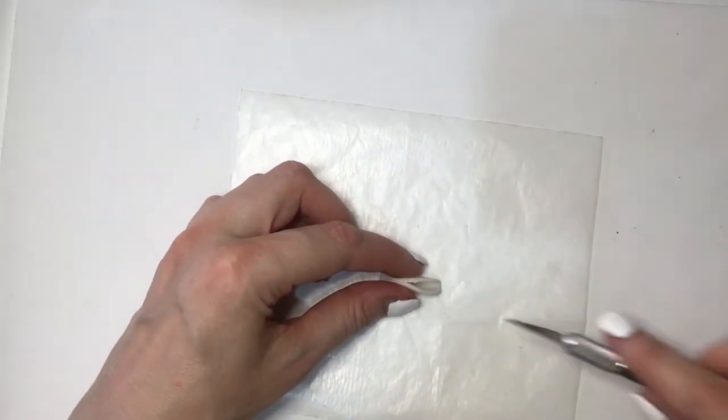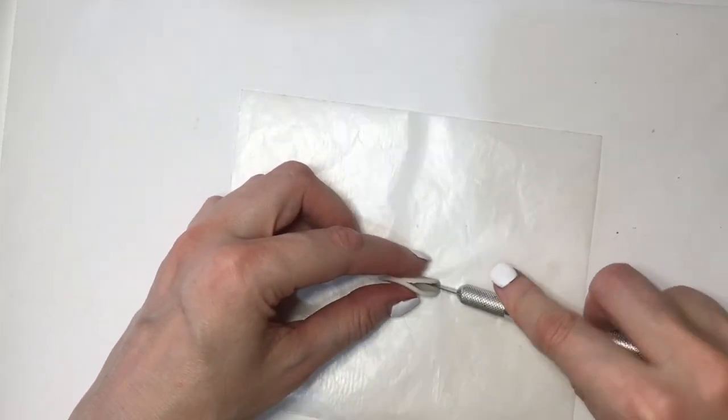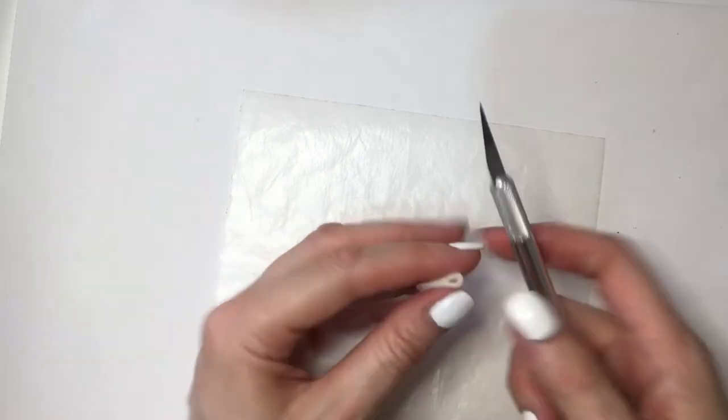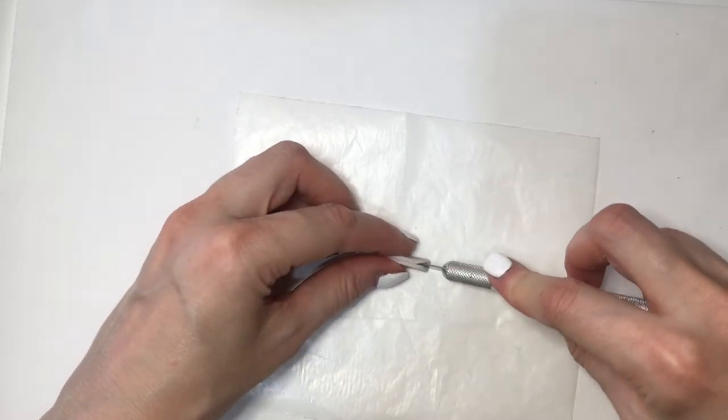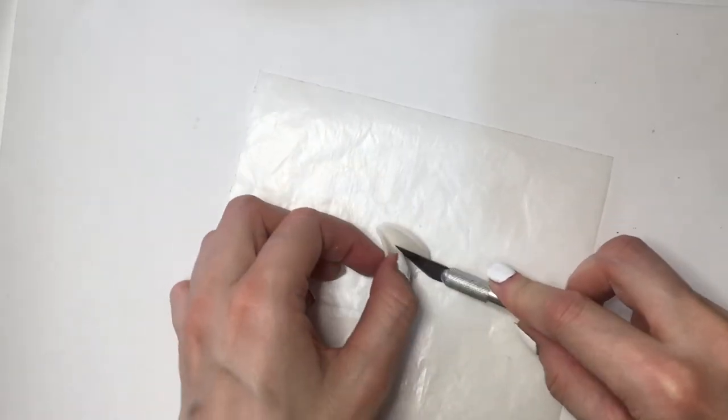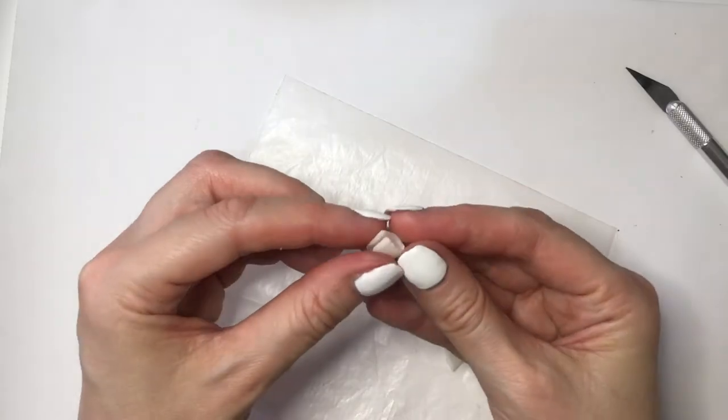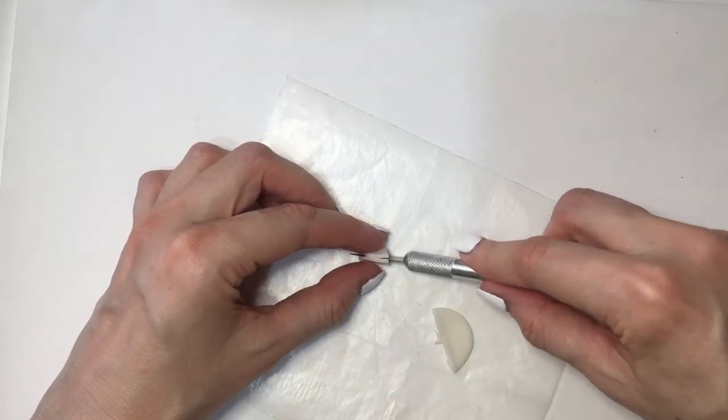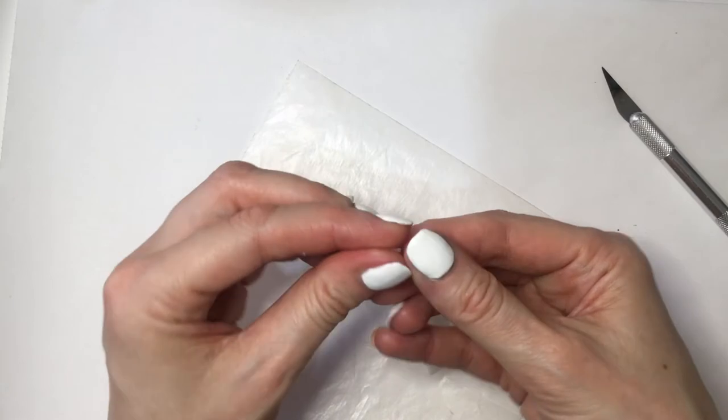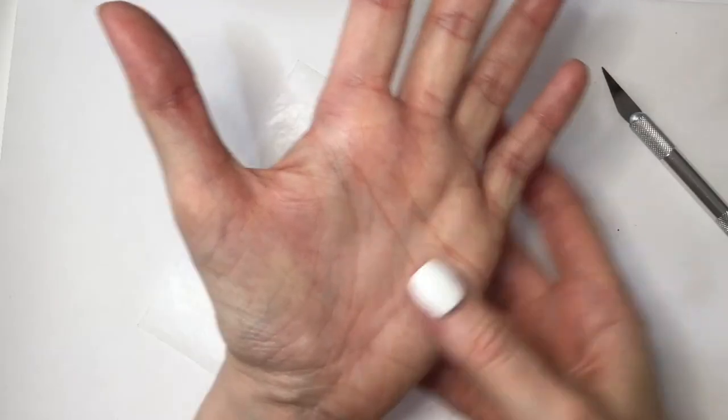I want to cut this in half with my Exacto knife, and by folding this, everything is going to be more even. Folding that in half again, cutting it with my Exacto knife. So I'm going to be taking two of those quarters, the tiny parts.